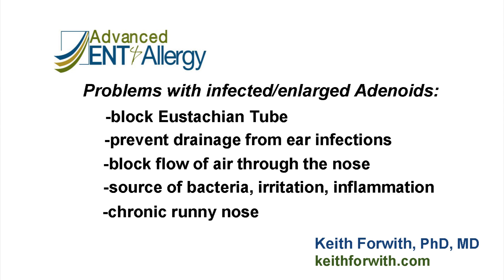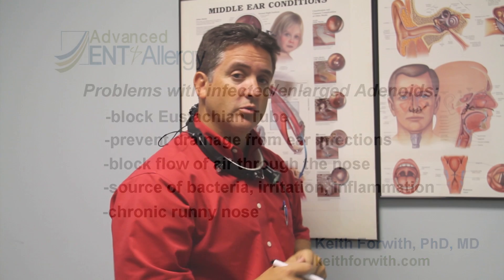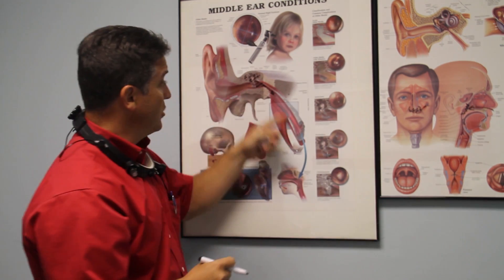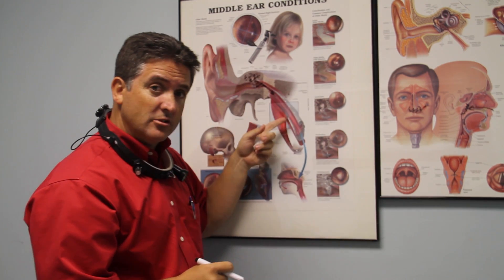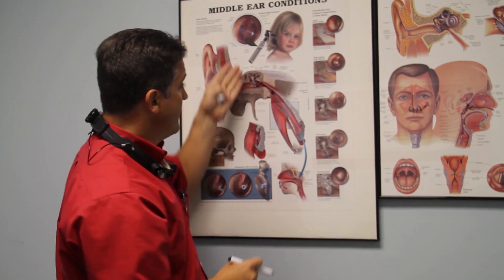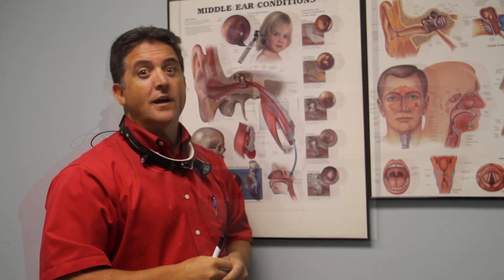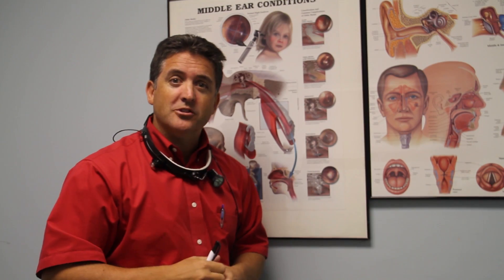One of the advantages of removing the adenoids is oftentimes it will improve a chronic runny nose. Oftentimes it will help the eustachian tube to work better and allow kids to not have as many ear infections. I hope this explanation was helpful to you. If you have other questions, check out my other videos on YouTube or on KeithForth.com.